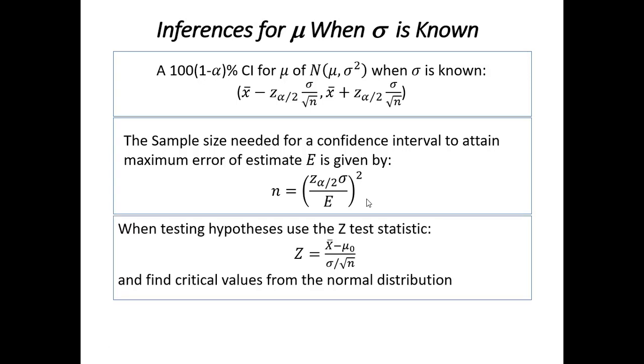If we need to run a hypothesis test, then we use the z test statistic. So, z is x-bar minus mu naught, this is the hypothesized mean, divided by sigma over the square root of n. And we would calculate this and then compare this to the critical values that we would look up from our normal distribution table.